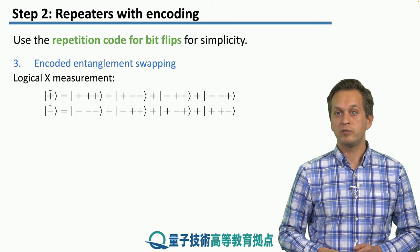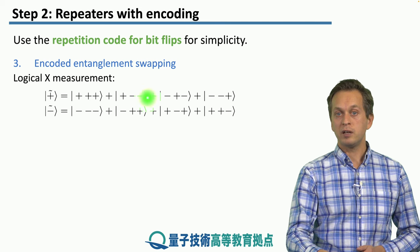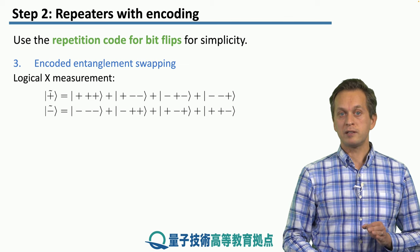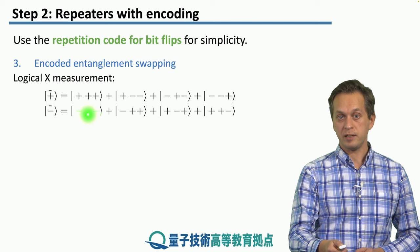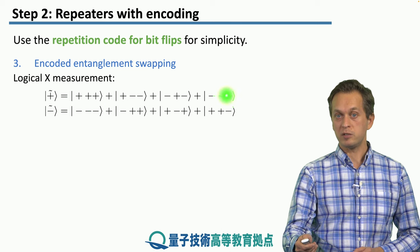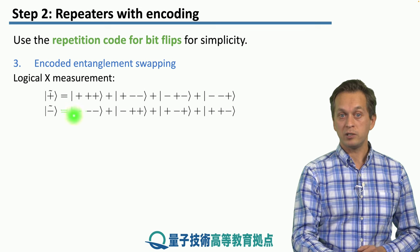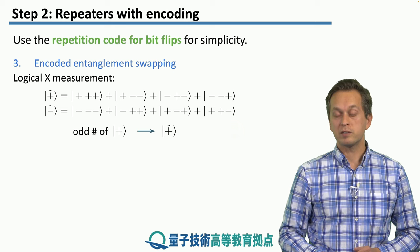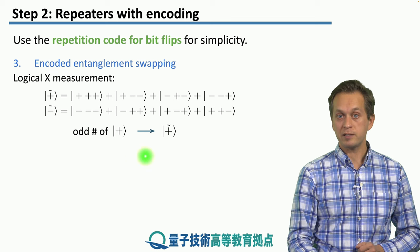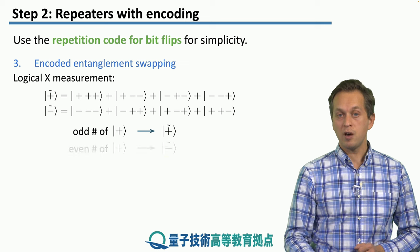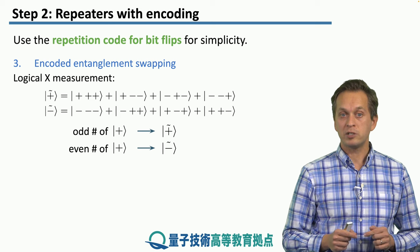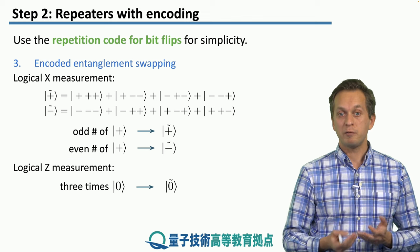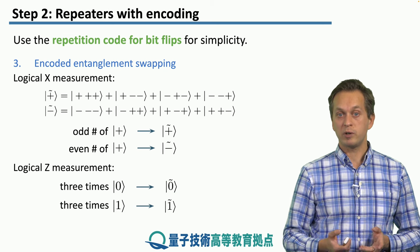We now understand why we measure qubits A in the X basis and qubits B in the Z basis. The logical X measurement works by noting that logical |+⟩ can be written in terms of physical qubits where it always contains an odd number of |+⟩ states — either three or one — while logical |−⟩ contains an even number — either zero or two. So when we measure qubits A in the X basis, an odd number of |+⟩ outcomes collapses onto logical |+⟩, and an even number collapses onto logical |−⟩. Z measurements at the logical level are simpler: measuring three zeros collapses onto logical |0⟩, and three ones collapses onto logical |1⟩.